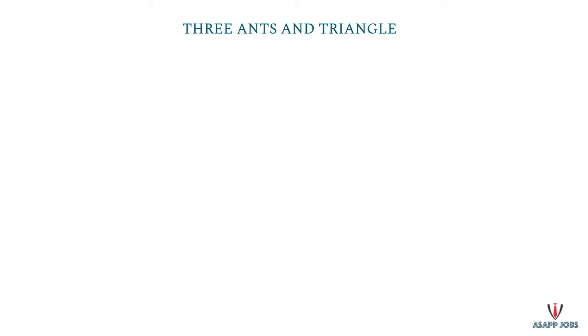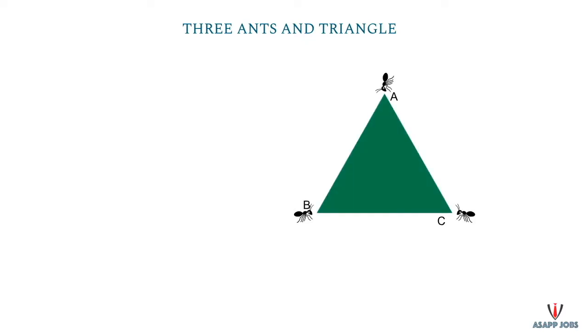Today we will solve the three ants and triangle problem. Imagine that there is an equilateral triangle and there are three ants in the corners of the triangle. As you can see in this picture, there are corners A, B, and C, and there is an ant in each corner. These ants can move in any direction on the triangle.